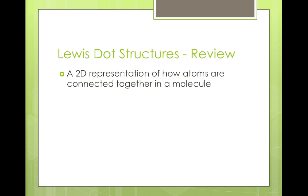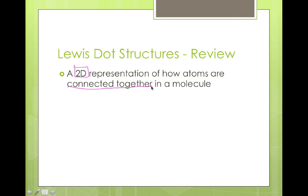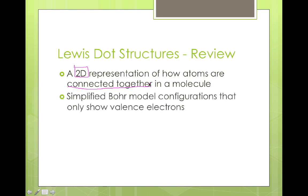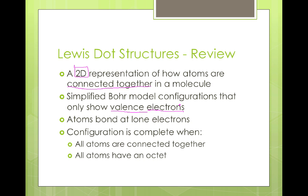Let's start with a review of Lewis dot structures. The most important thing to remember is that they are a two-dimensional representation of how atoms are connected together — that's really the only information a Lewis dot structure provides. It's a simplified Bohr model configuration where we focus only on the valence or outermost electrons involved in bonding. We use that to identify lone electrons where bonds can form, and the structure is complete when all atoms are connected and have reached an octet.